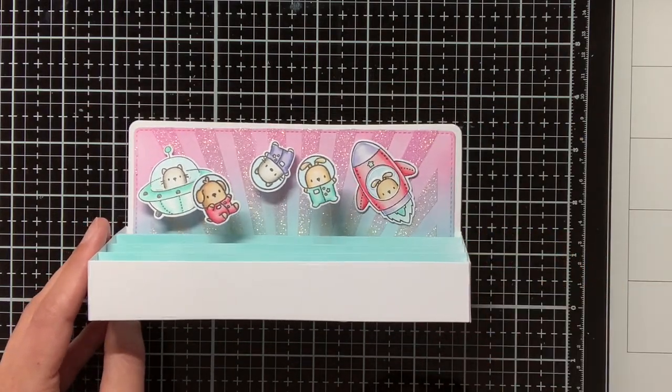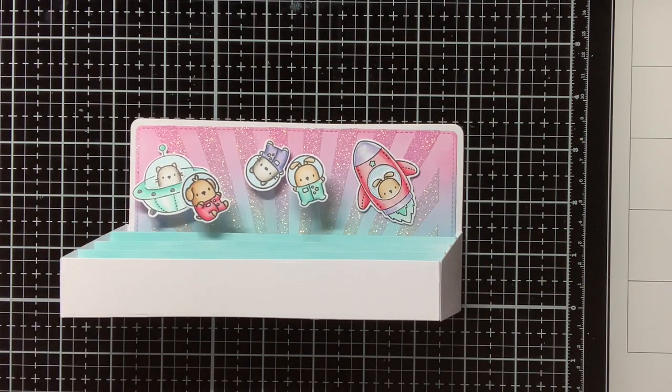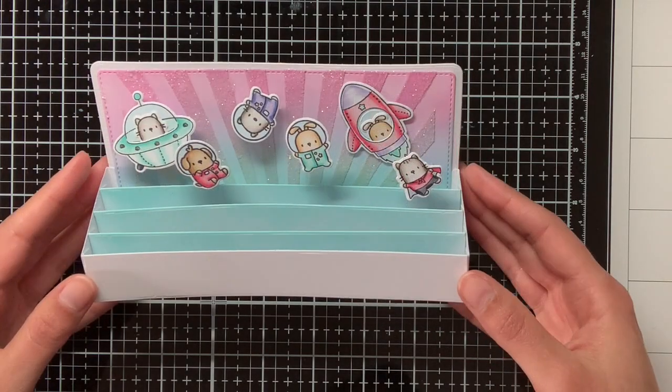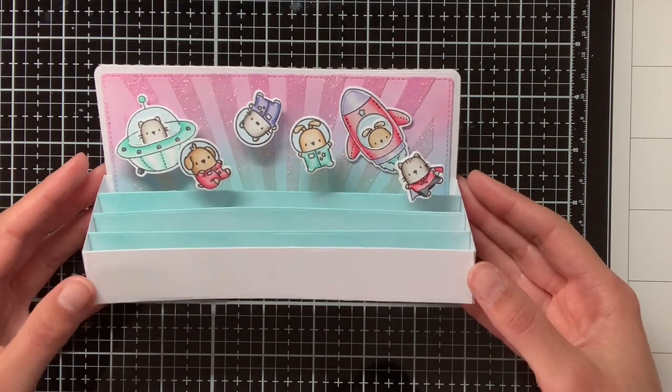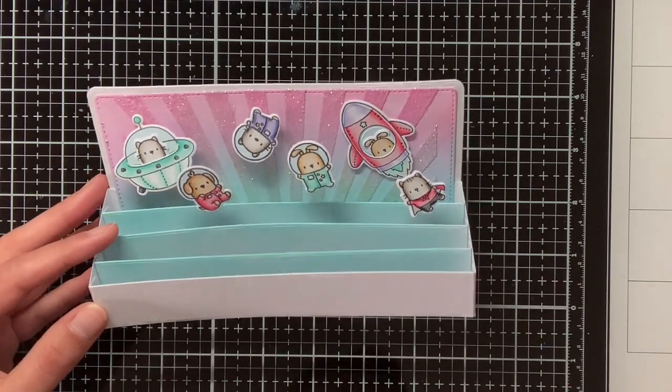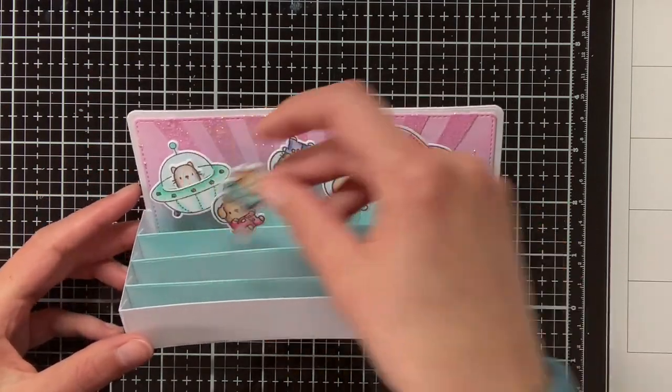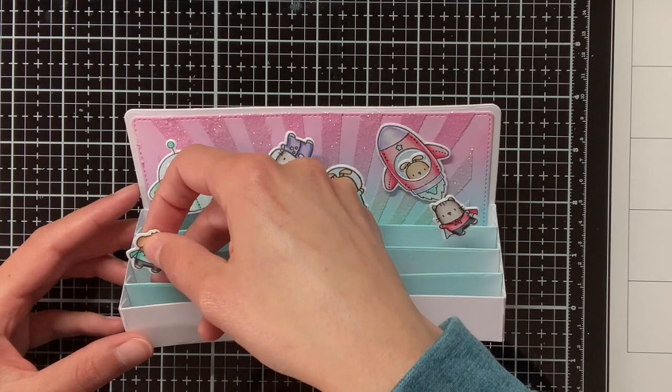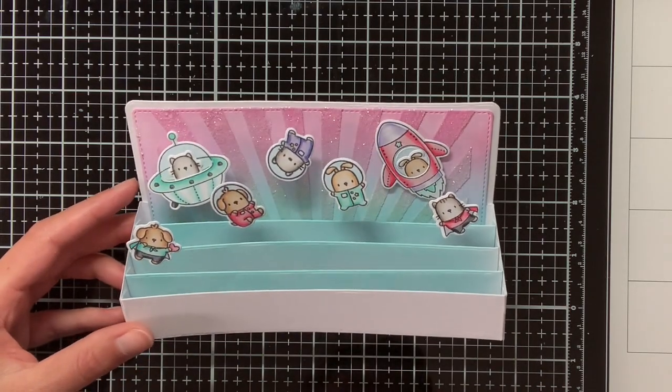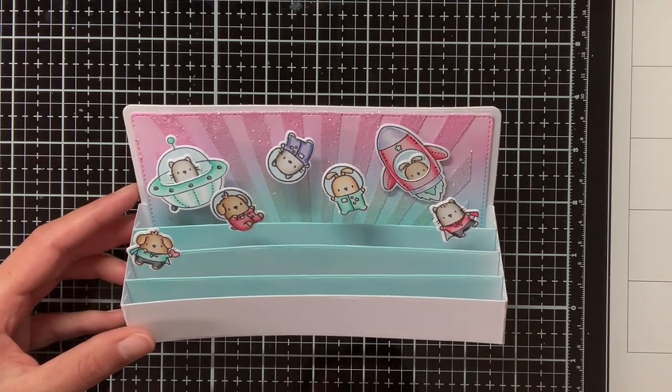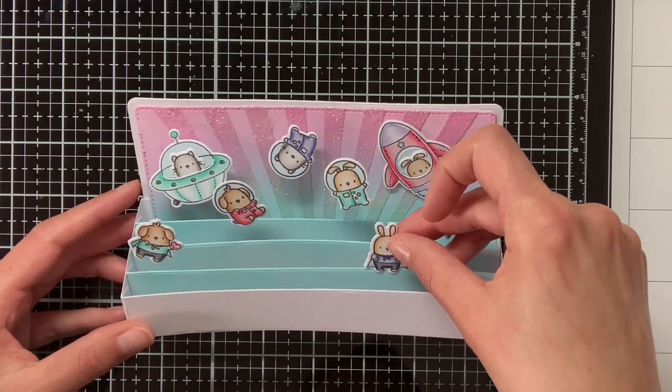Maybe you have already noticed, but for all of the inserts I have also ink blended that with the Distress Oxide Salvaged Patina. And for the decorative pieces, which I will also adhere in a bit, I have created the same gradient as on the background, so it will be Salvaged Patina at the bottom and Kitsch Flamingo at the top.